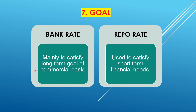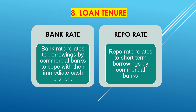Next, goal. Bank rate is mainly used to satisfy the long-term goal of the commercial bank, while repo rate is used to satisfy short-term financial needs. Here I don't mean that bank rate is for a longer period — it is about the goal. If we talk about loan tenure: bank rate relates to borrowings by commercial banks to cope with their immediate cash crunch, while repo rate relates to short-term borrowings by commercial banks.